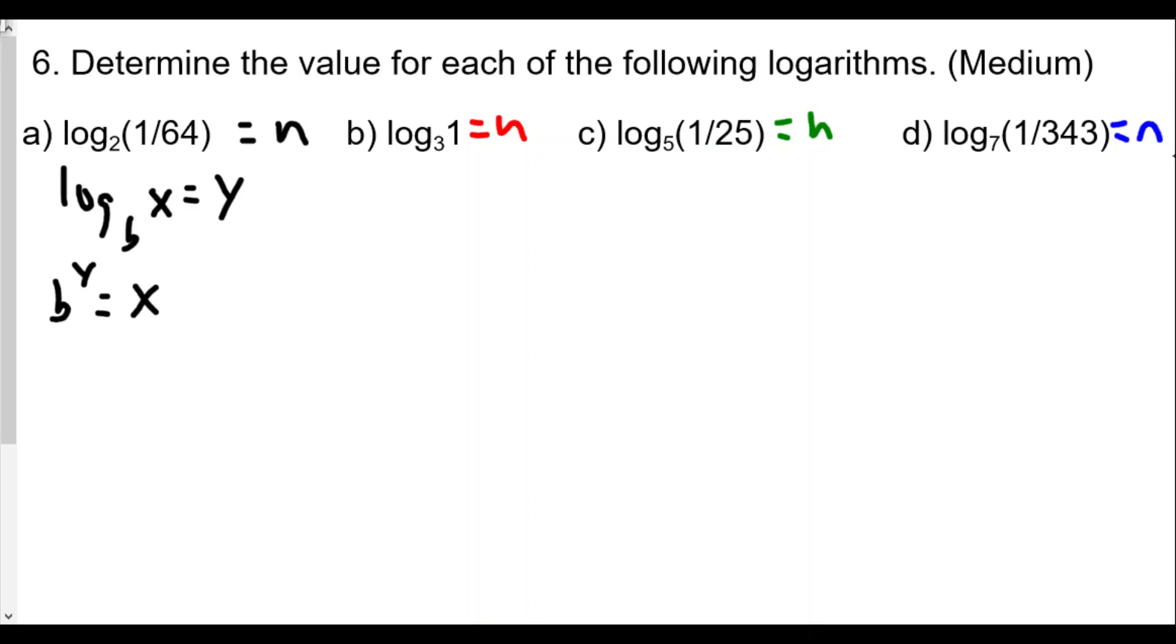All right, so if the base is 2, we'll have 2 to the n equals 1 over 64. Okay, now if you remember we talked about how 1 over 64 really is 64 to the negative first power, and we want to now set these bases equal to each other. So 64 as base 2 is going to be 2 to the sixth power. So 2 to the n equals 2 to the 6 raised to the negative 1, which is equal to 2 to the negative 6.